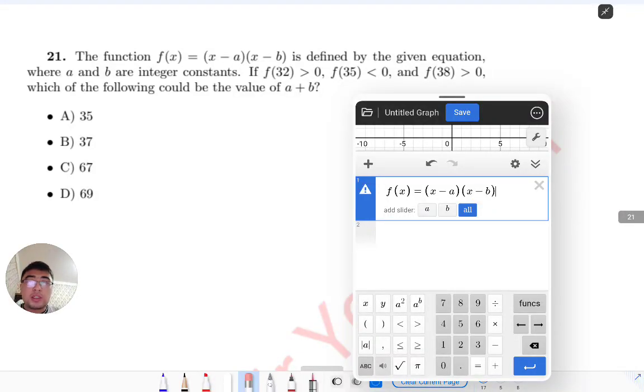Hi guys, let's solve this problem together. The function is defined by the given equation where a and b are integer constants. f(32) is greater than zero, f(35) is less than zero, and f(38) is greater than zero. Which of the following could be the value of a plus b?